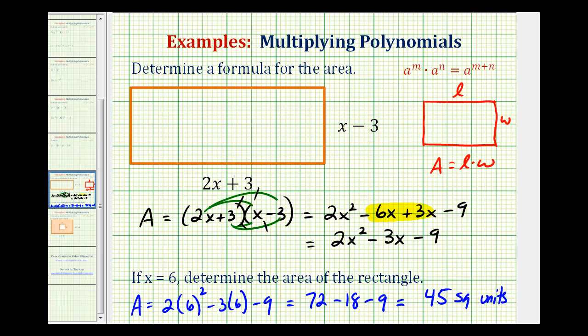And just to compare, if we use the factored form, we'd have the area equals 2 times 6 plus 3. Well 2 times 6 is 12, 12 plus 3 would be 15. And for x minus 3, we'd have 6 minus 3, which would be 3. 15 times 3 is equal to 45.